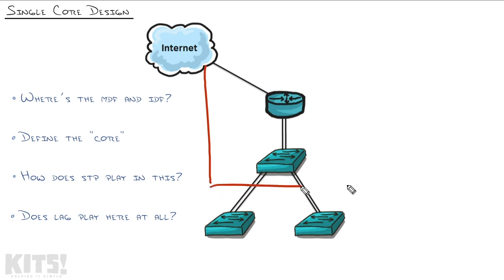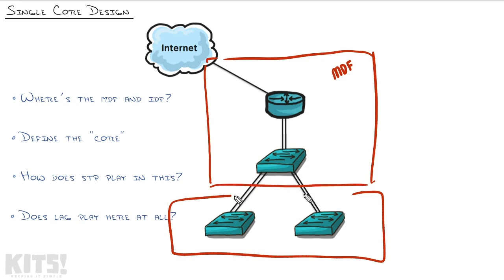Now I want to bring this back around because I have a superpower where I can feel the questions going through your head. You're thinking, I get it, now we've got the MDF. How does this relate to what we just saw in the actual office? I mean, there was two switches in the MDF, right? So where does that second floating switch go that's out there? That's a great question.